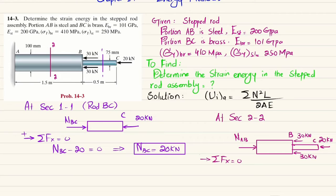Using the equation of equilibrium and taking the assumed direction of NAB as positive: NAB minus 30 minus 30 minus 20 equals zero, so NAB equals 80 kN.